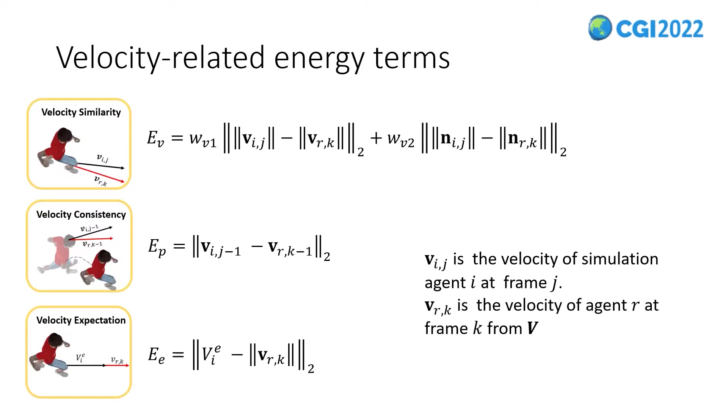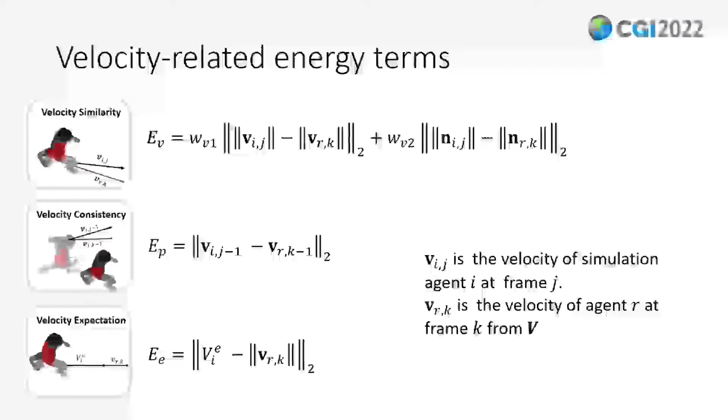Velocity similarity, consistency, and expectation are three energy terms related to an agent's velocity, which are used to ensure the individual's smooth continuous movement and the expectation of moving at the desired velocity. Similarity measures the current velocity similarity between agent i and r. Consistency measures the similarity between the two agents' velocities at their respective previous frames. Expectation measures the similarity between the velocity of agent r and the desired velocity of agent i.